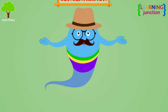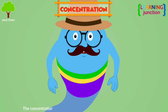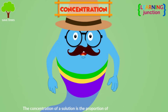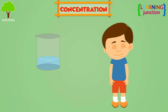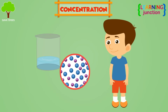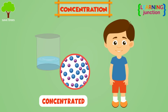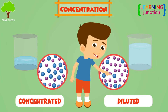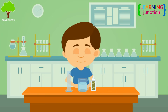Let's see what concentration is. The concentration of a solution is the proportion of the solute to solvent. If there is a lot of solute in a solution, then it is concentrated. If there is a low amount of solute, then the solution is said to be diluted.